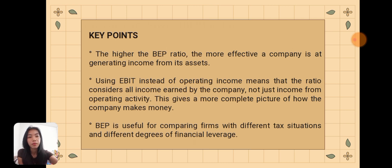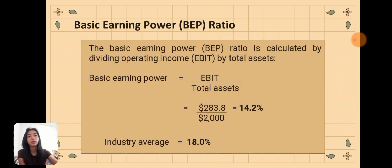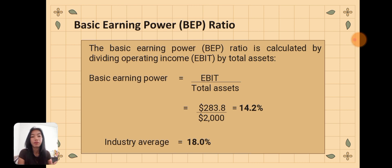Now for the calculation. The basic earning power ratio is calculated using this formula: BEP = Operating Income (EBIT) ÷ Total Assets.